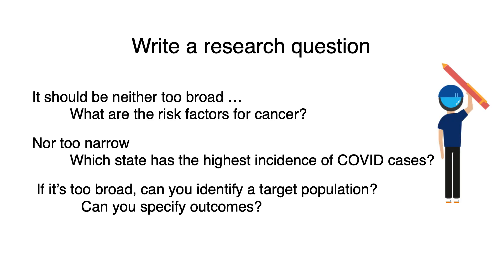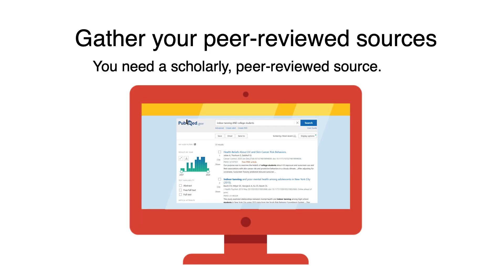Your assignment begins with a research question or topic. Topics should not be too broad, nor too narrow. If your topic is too broad, can you identify a specific population, or focus on a particular outcome? Your next step is to gather your sources. Remember, you need one peer-reviewed scholarly source. Your additional sources must come from authoritative sources in the health sciences, such as the CDC, World Health Organization, or the American Cancer Society. Choose your sources carefully.